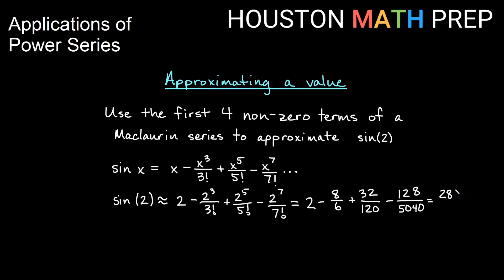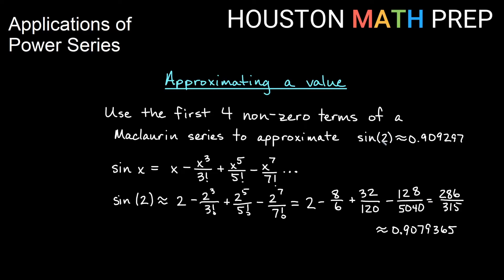Our approximation ends up being 286 over 315 in reduced form, and as a decimal we get about 0.9079365. If we ask a scientific calculator, it gives a decimal approximation of about 0.909297. So we are still accurate to at least a couple of decimal places — not quite as accurate because the value we're approximating is a bit farther from zero, and we're using McLaurin which is centered at zero.